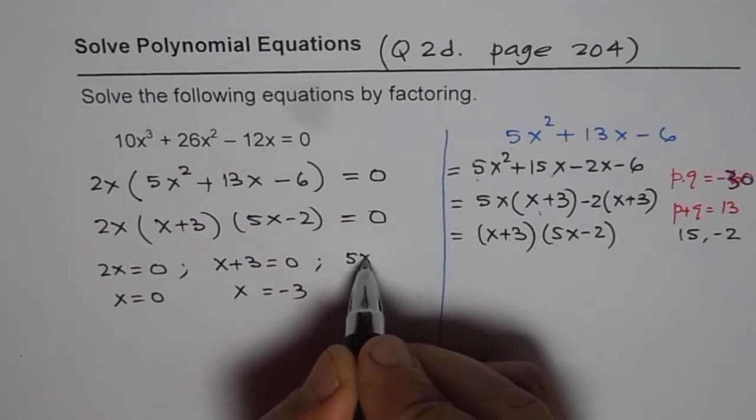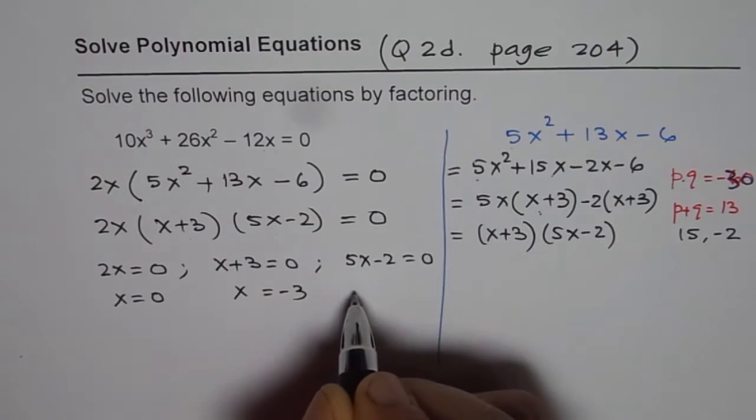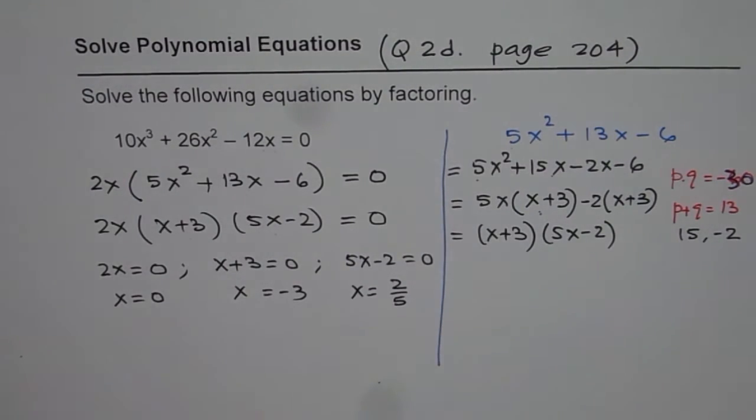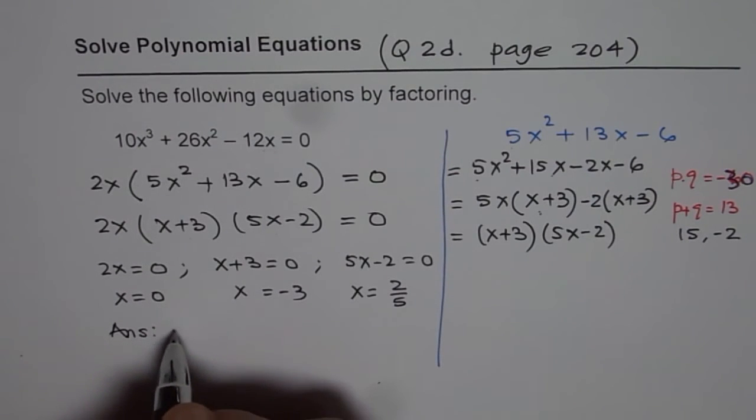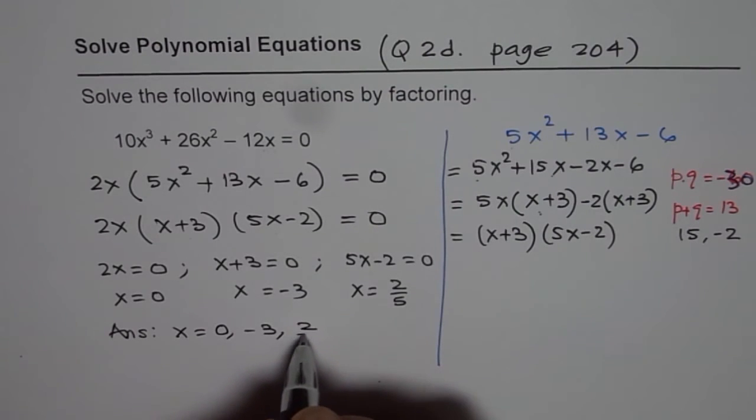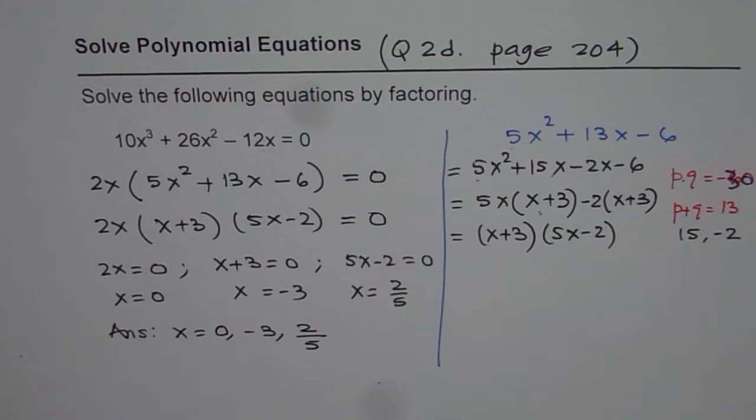And the third one is, when 5x minus 2 equals to 0. So, we get x equals to 2 over 5. Do you get the answer? So, we can write down the answer as, x equals to 0, minus 3, or 2 over 5. These are the three solutions.